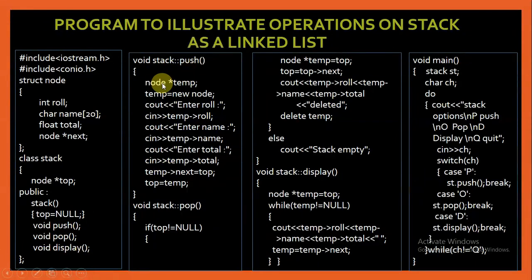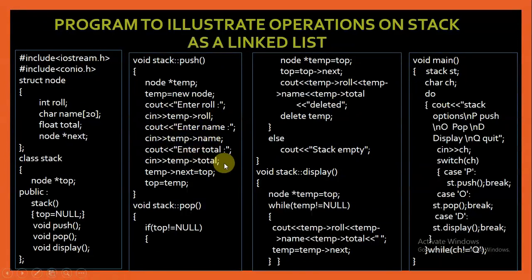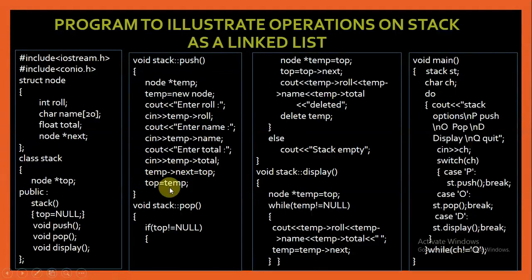In the push function, I am creating a temporary variable of node type using the new operator to assign memory of node type, and the address of this memory location is stored in temp. Then I am filling the data in this temporary node — inputting temp arrow role, temp arrow name, and temp arrow total. Then I am assigning temp arrow next the value of top, and top is assigned the value of temp. We will understand these functions with the help of a diagram.